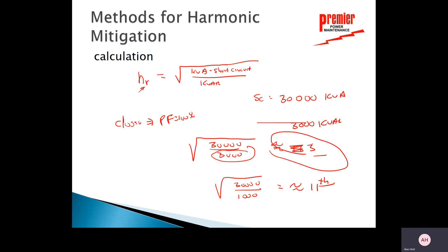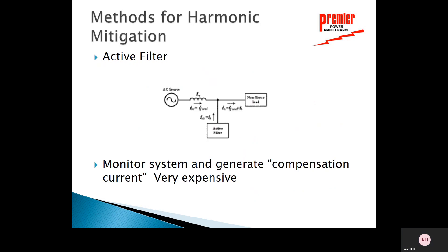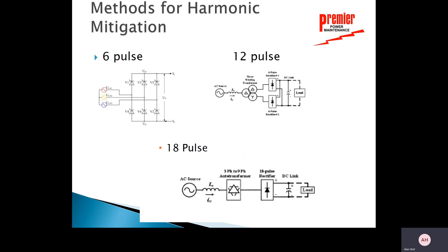Active filters are a newer, more expensive but very effective solution. The active filter monitors what is happening in the line and injects whatever frequency is required to cancel out the harmonics. It is relatively new and expensive, so most facilities cannot afford it.